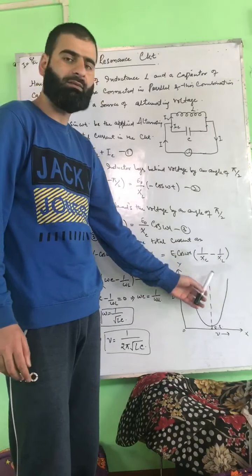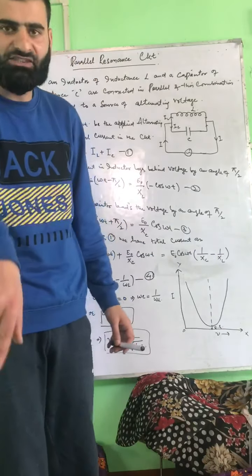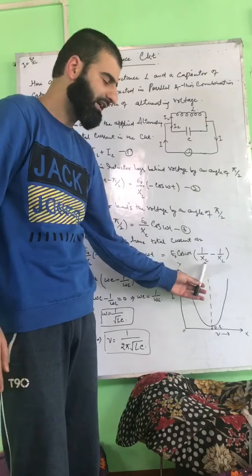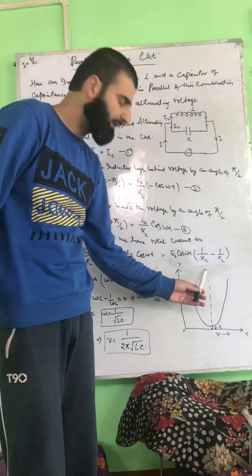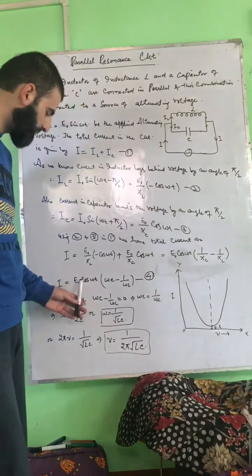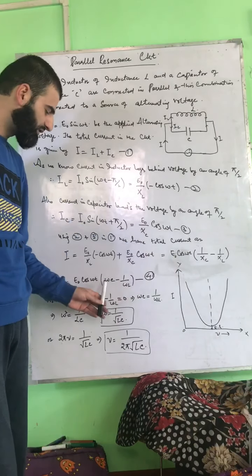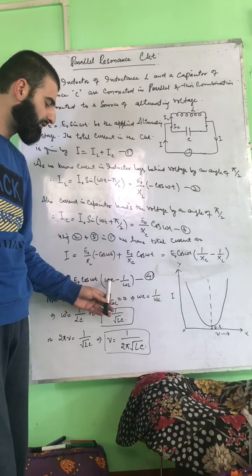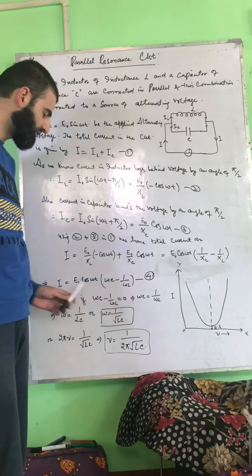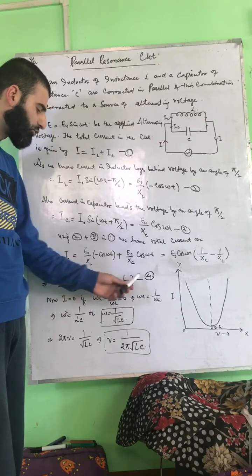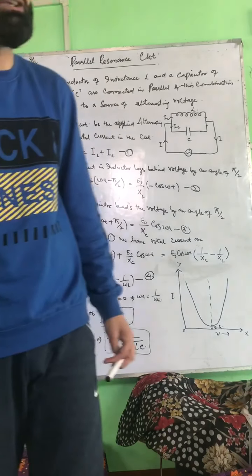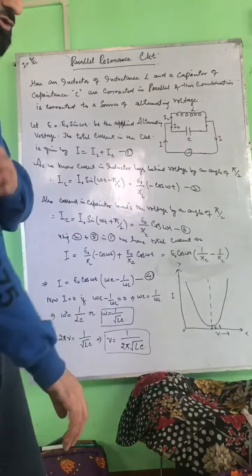Since XC = 1/(ωC), the term 1/XC becomes ωC. And since XL = ωL, the term 1/XL becomes 1/(ωL). So the total current through the parallel resonant circuit is I = E₀ cos(ωt) × (ωC − 1/(ωL)).